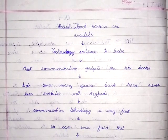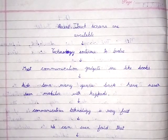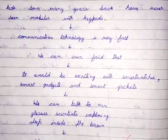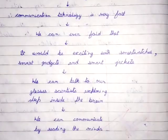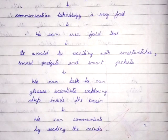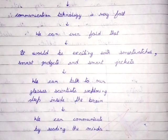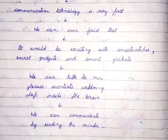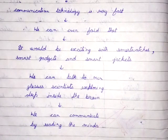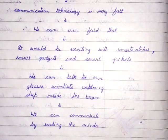Most communication gadgets are like books. Kids born many years back have never seen mobiles with keypads. Communication technology is very fast and we can even fold it. It would be exciting with smart watches, smart gadgets and smart jackets. We can talk to our glasses. Scientists are exploring deep inside the brain, and we can communicate by reading minds.